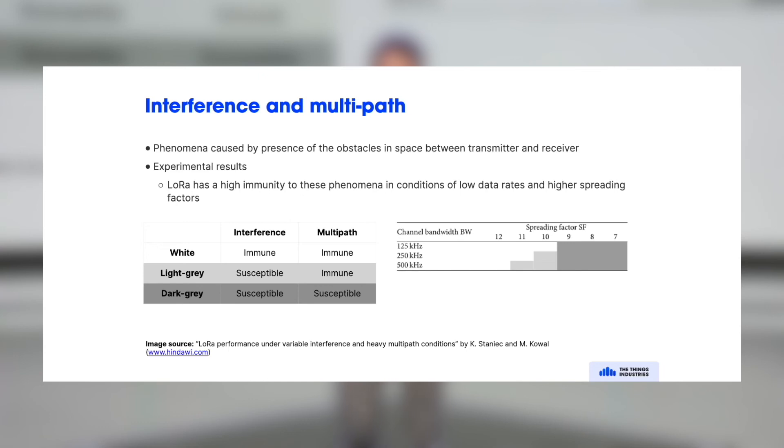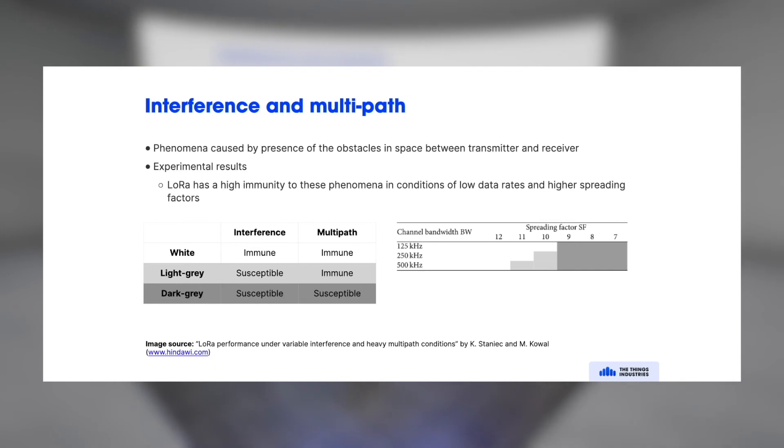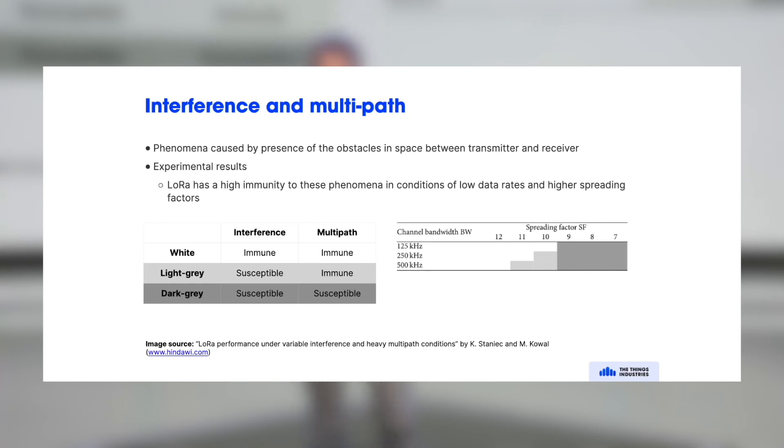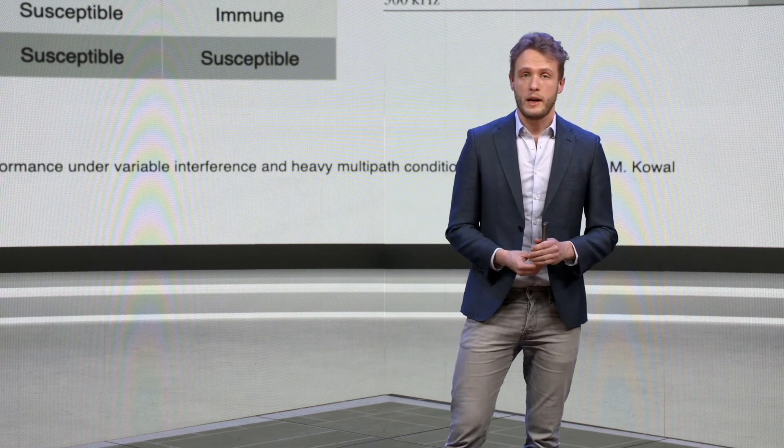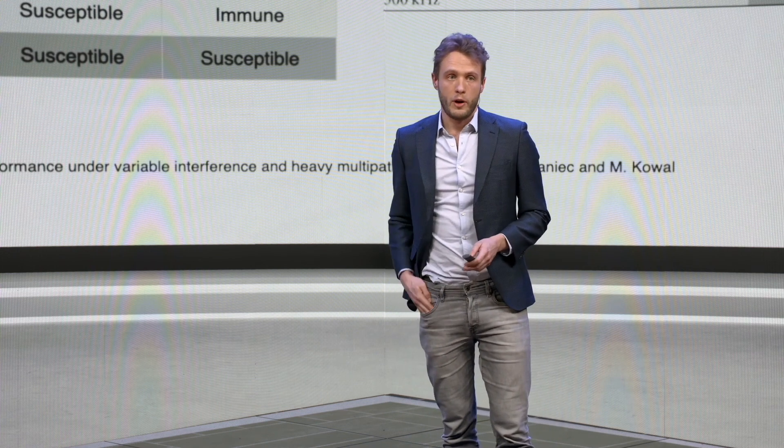So interference and multipath, there have been quite some scientific research on this topic. And the experimental results so far are that LoRa has a very high immunity to these phenomena, especially in low data rates. And so the higher spreading factors. And what's nice about the adaptive data rate is that this can dynamically be configured. And also that since it's a licensed spectrum, anyone can set up gateways. And that also means that if you need better coverage, if you need to have gateways closer to an end device, you basically buy a gateway and install it there because you don't depend on a public operator to do so.